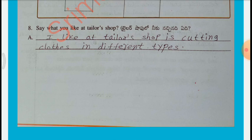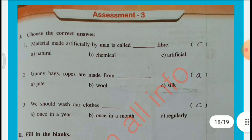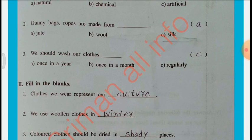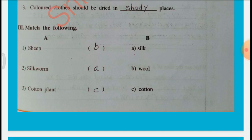Assessment 3 — Choose the correct answer: Material made artificially by man is called artificial fiber. Gunny bags and ropes are made from jute. We should wash our clothes regularly. Fill in the blanks: Cloth we wear represents our culture. We use woolen clothes in winter. Colored clothes should be dried in shady places. Match the following: Sheep — Wool; Silkworm — Silk; Cotton plant — Cotton.